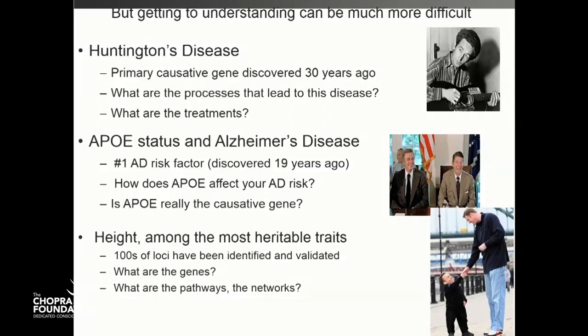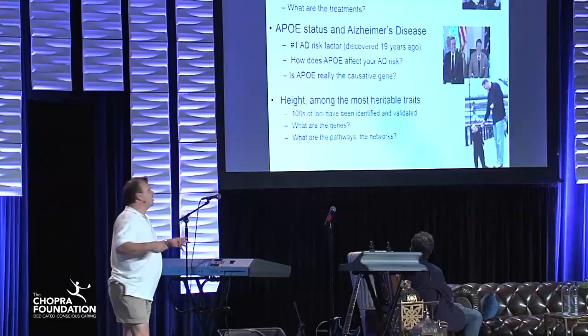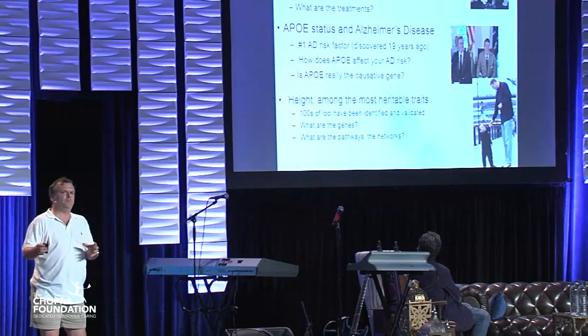This isn't specific to Huntington's disease. We see this with Alzheimer's disease — APOE, the number one risk factor for Alzheimer's. For those unfortunate enough to carry the mutation in that gene, that gives you a very increased risk of developing that disease. 19 years ago that was identified, and yet we still don't have an understanding of how that predisposes you to Alzheimer's. We don't have treatments really based on that discovery. So why is it that we can accumulate this knowledge, but we're not achieving understanding to actually impact human well-being?